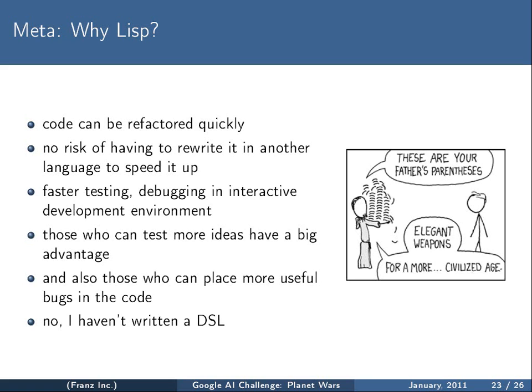Lisp is also a good language because it can be refactored quickly. The main thing about this competition is that it can be viewed as an AI contest, but it can also be viewed as a programming contest. And it was a question of speed — how quick your development is, how much your tools drag you down. And this is where I see that Lisp is just great. It allows me to iterate extremely quickly over ideas.